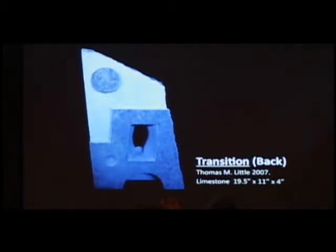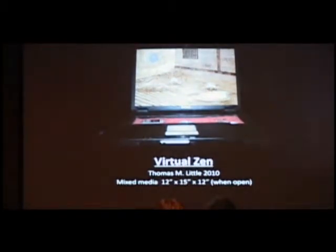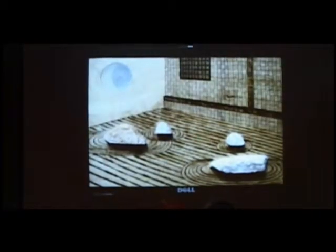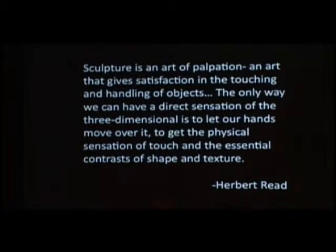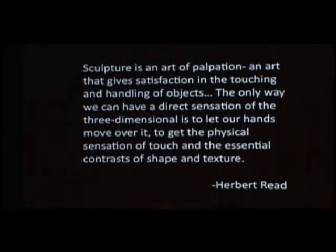To get beyond that, second semester I made this piece here. It's called Virtual Zen. It's my old laptop that stopped working, so I took it apart and replaced the screen with this wood burning of a Japanese Zen garden. Those stones right there are actual stones protruding from the screen — white marble, alabaster, and soapstone. Some are polished, some are more textured. That way you get a good range of hardness and texture. As art critic Herbert Reed says, sculpture is an art of palpation — an art that gives satisfaction in the touching and handling of objects. The only way we can have a direct sensation of the three-dimensional is to let our hands move over it, to get the physical sensation of touch and the essential contrast of shape and texture.